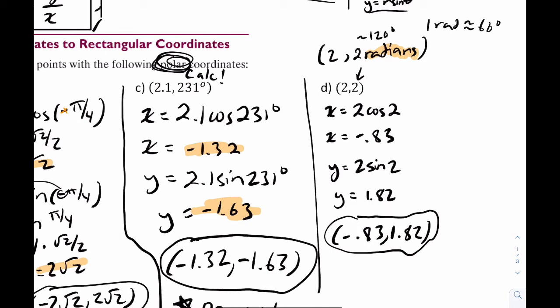You want to understand that this is in quadrant two, and that makes total sense because the point 2 comma 2 in polar is like saying 2 comma 120 degrees, which would land somewhere in quadrant two.